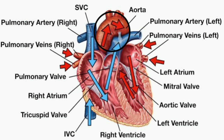To summarize the flow: blood enters the right atrium, moves to the right ventricle where it is pumped out to the lungs — this is pulmonary circulation. It then comes back through the pulmonary veins into the left atrium and is pumped out to every other part of the body through the left ventricle — this is systemic circulation. The left and right ventricles pump out blood, while the left and right atria receive blood.